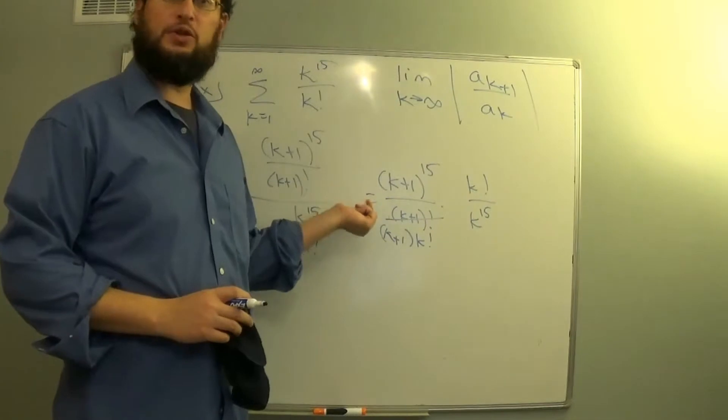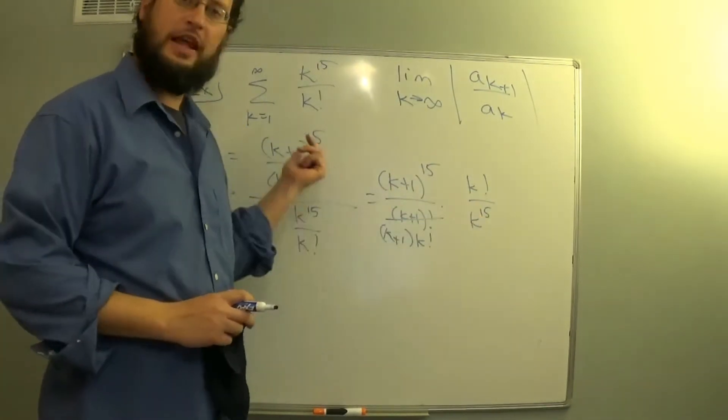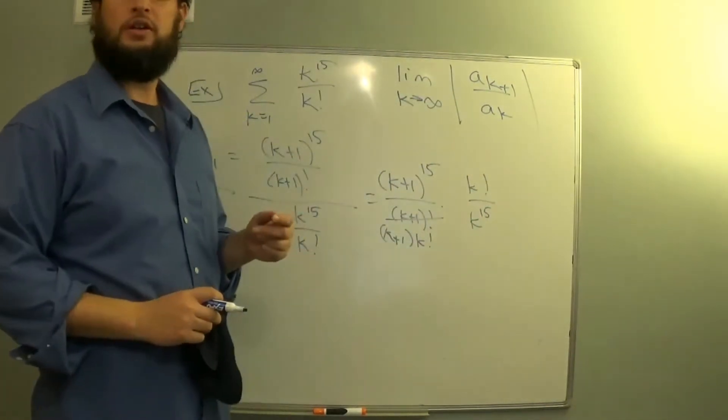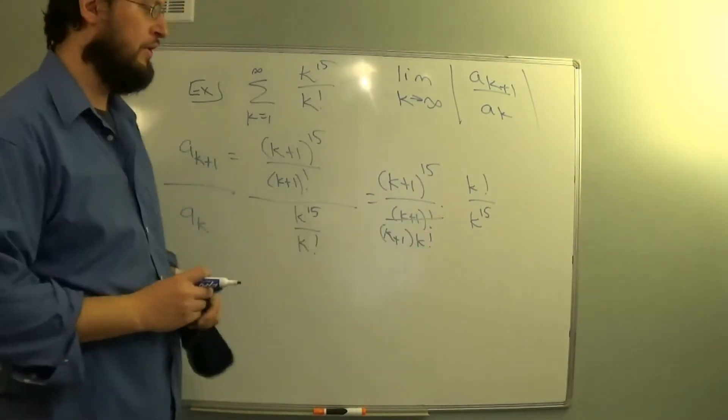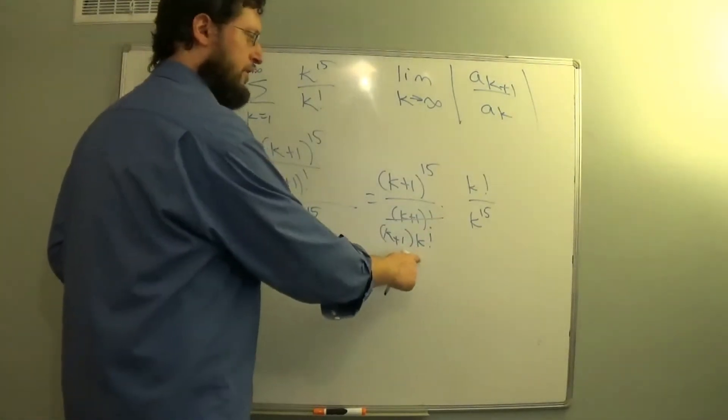If I have 10 factorial, that's 10 times 9 factorial. And I can always pull off the first one and the factorial then applies to the remainder.